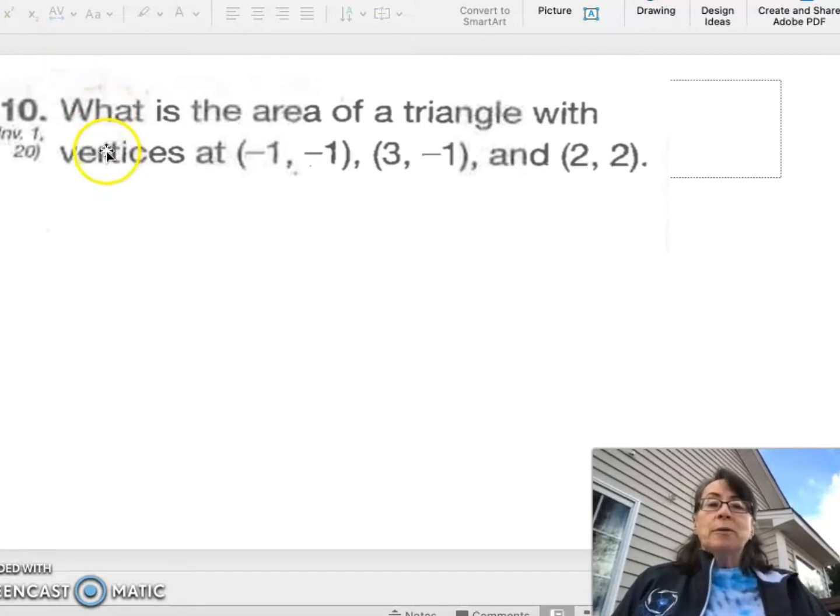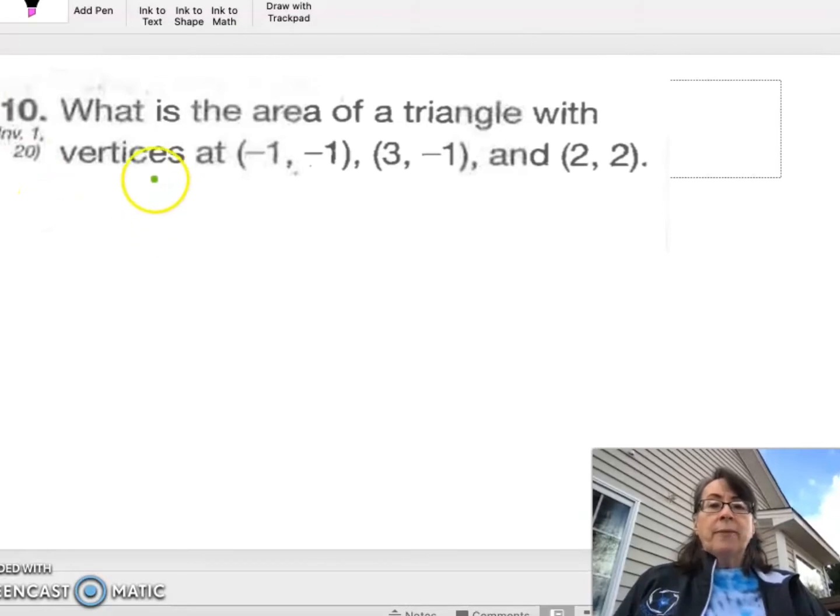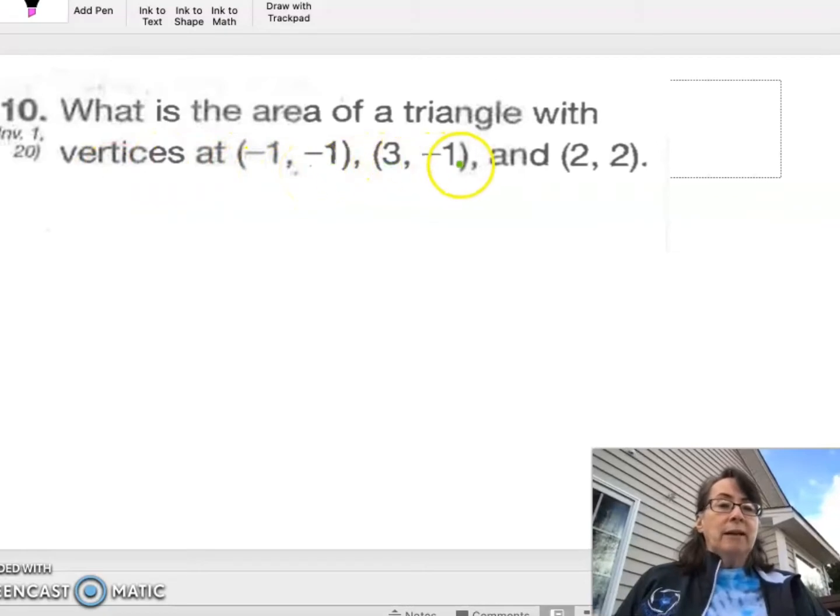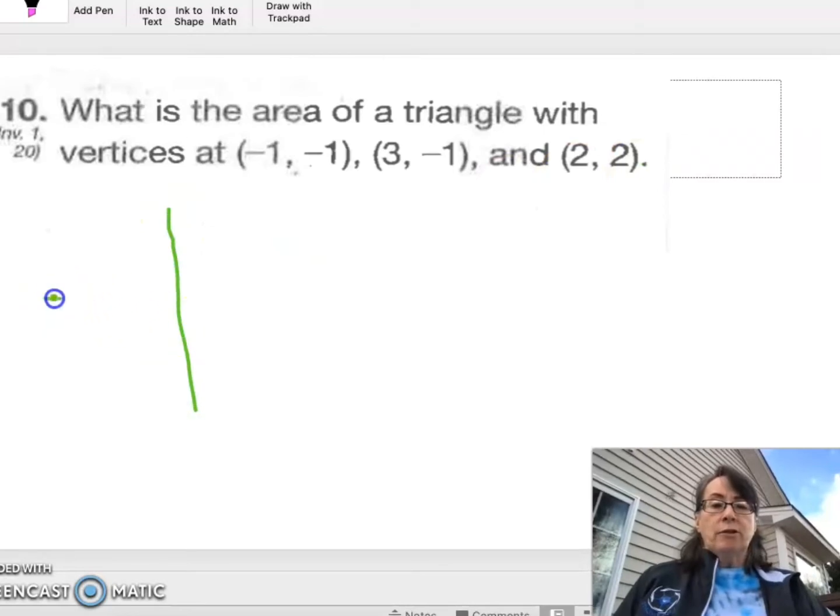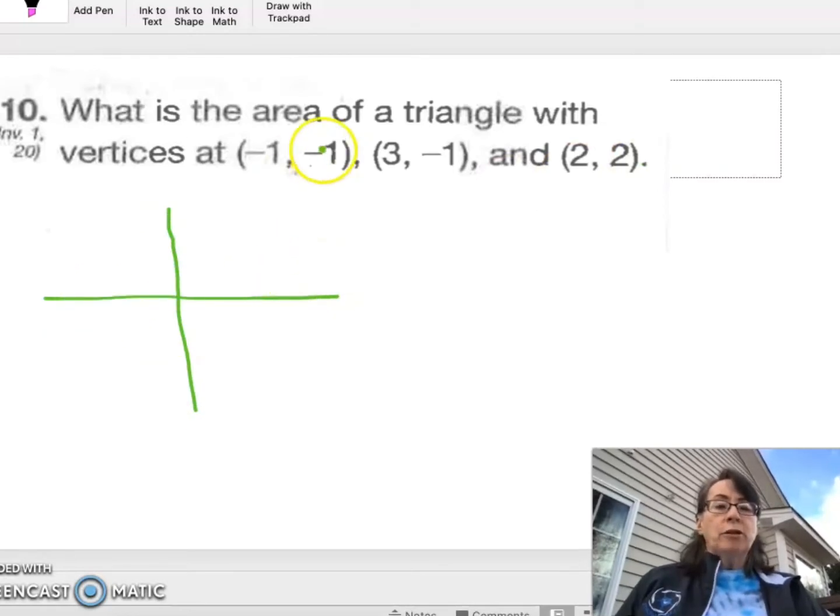Here is number 10. I am going to get a drawing tool and we will use green. What is the area of a triangle with vertices at negative 1, negative 1, 3, negative 1 and 2, 2. Well, it's always helpful to graph.